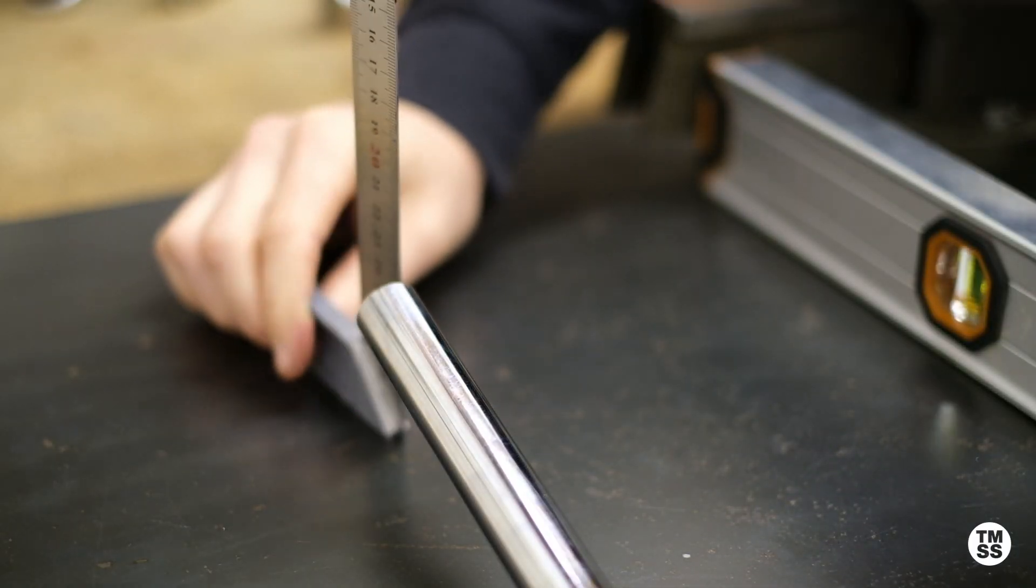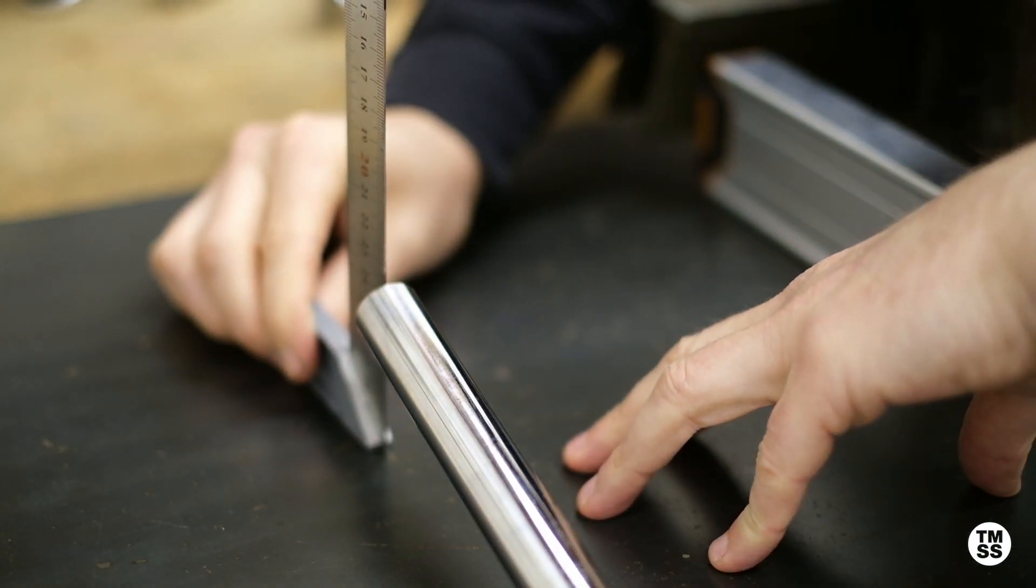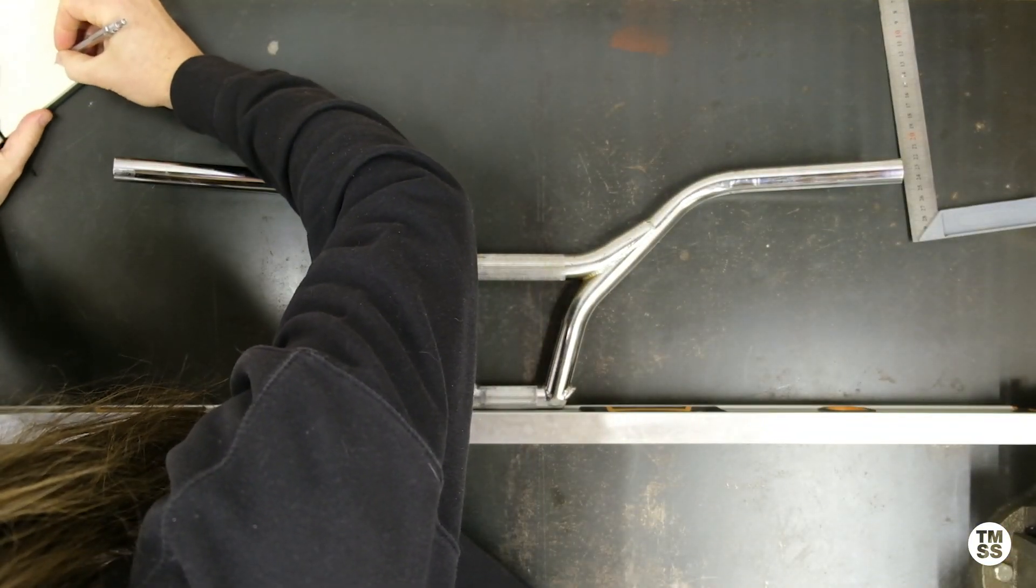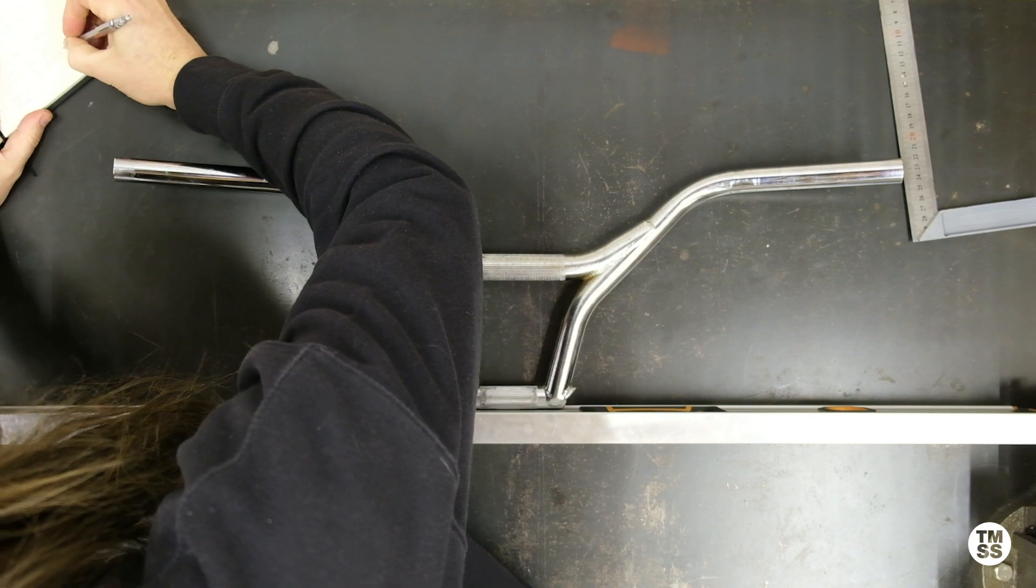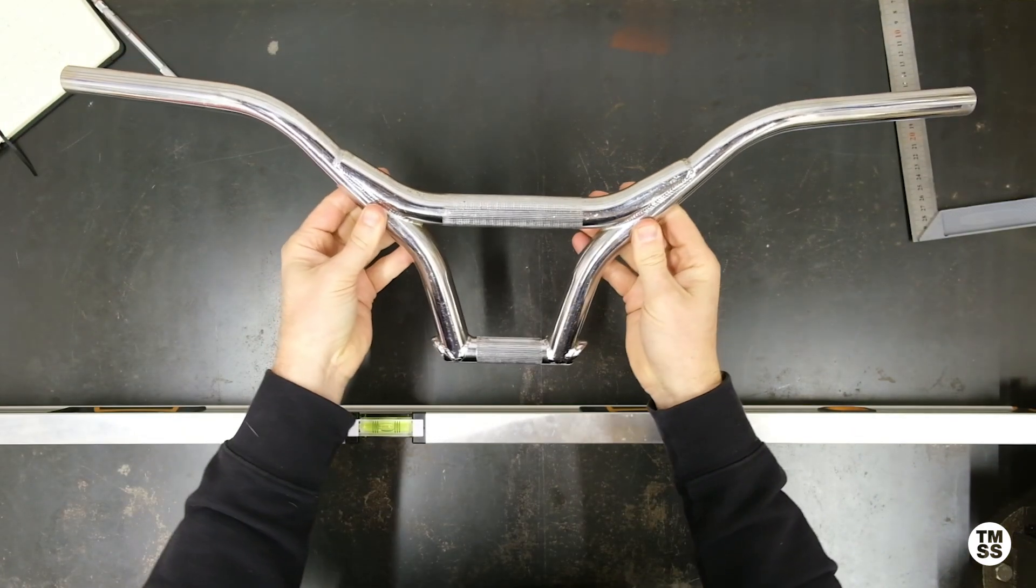After measuring one side and taking a note of what that is, we're going to repeat the process on the opposite end. Once again, the hope here is that both measurements are the same. If your rise and sweep measurements all correlate, your bars are straight and you are good to go.